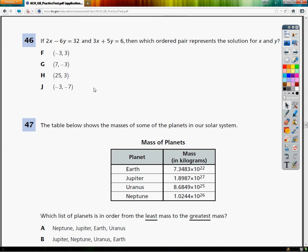Now, the question says, if 2x minus 6y equals 32, and 3x plus 5y equals 6, which ordered pair represents the solution for x and y? And I've got all those choices there. In the last method I'm going to talk about, you're actually going to use those a lot, but in the first method, not as much.